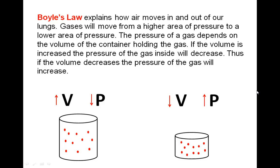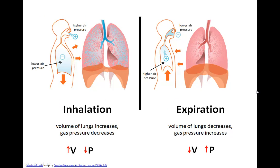The pressure of a gas depends on the volume of the container holding the gas. If the volume is increased, the pressure of the gas inside will decrease. If the volume decreases, the pressure of the gas will increase. When you inhale, the external intercostal muscles contract, lifting the ribs up and out, and the diaphragm contracts downward. This increases the volume of the lungs, which decreases the gas pressure inside. The air pressure inside the lungs is now lower than atmospheric pressure outside, creating a suction that draws air into the lungs — inhalation.